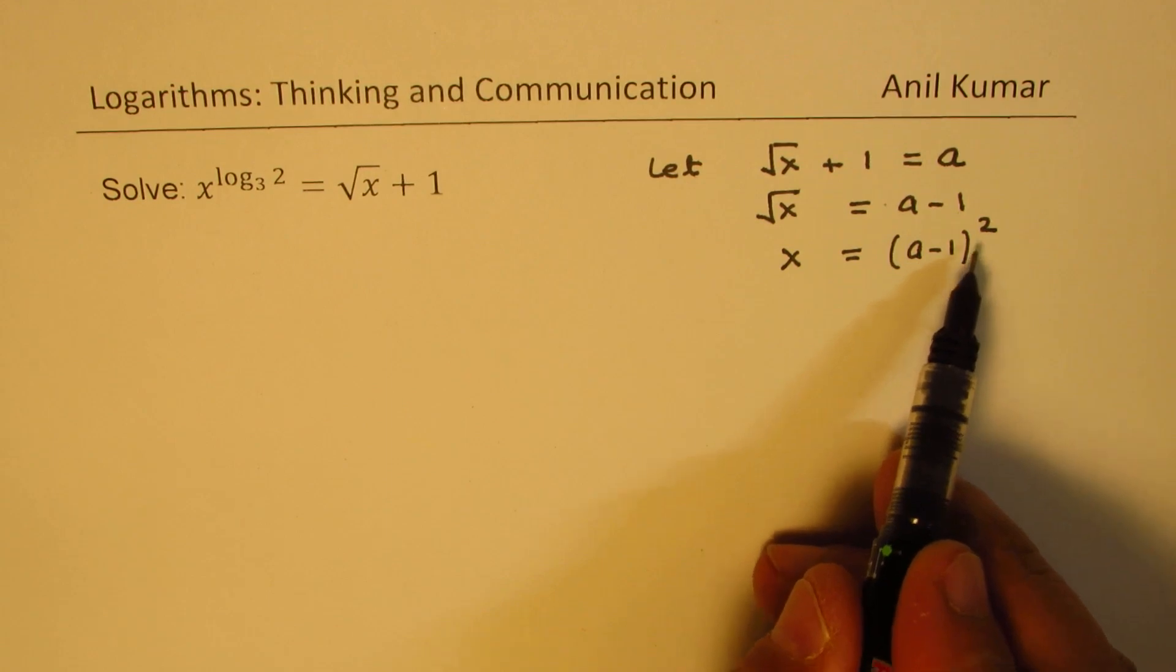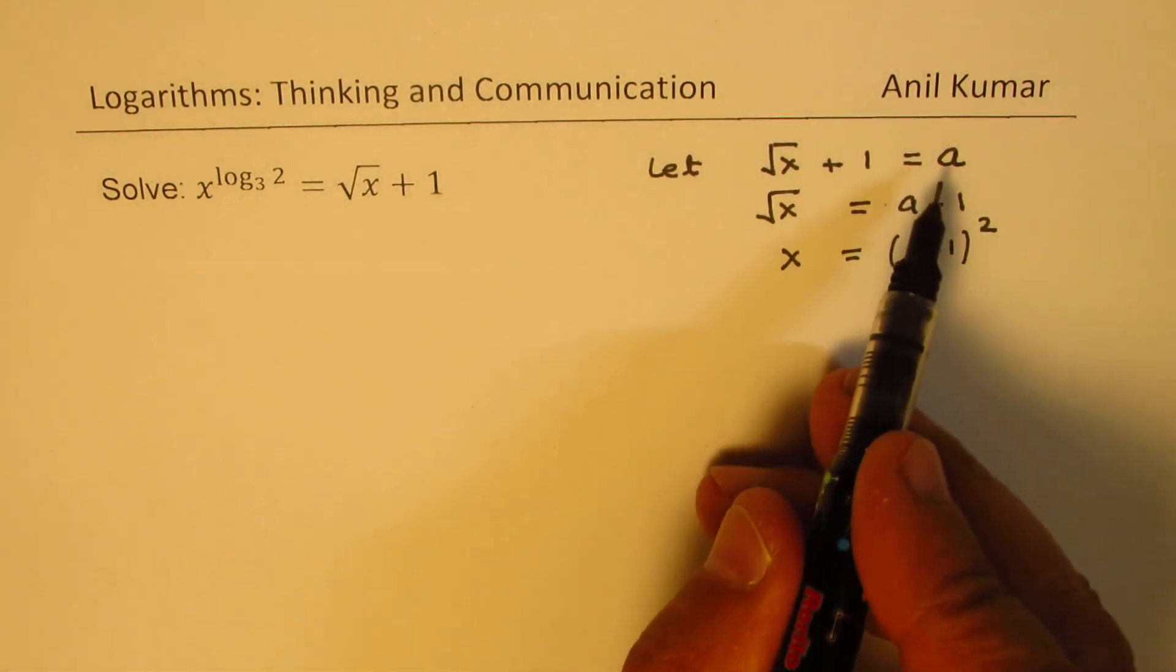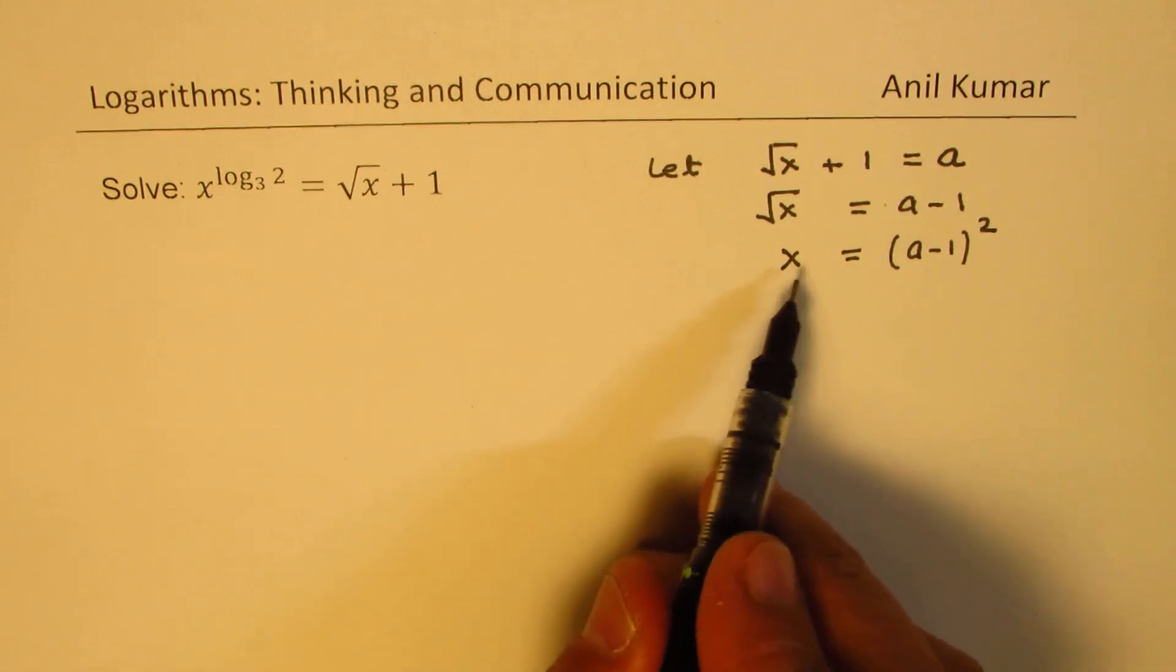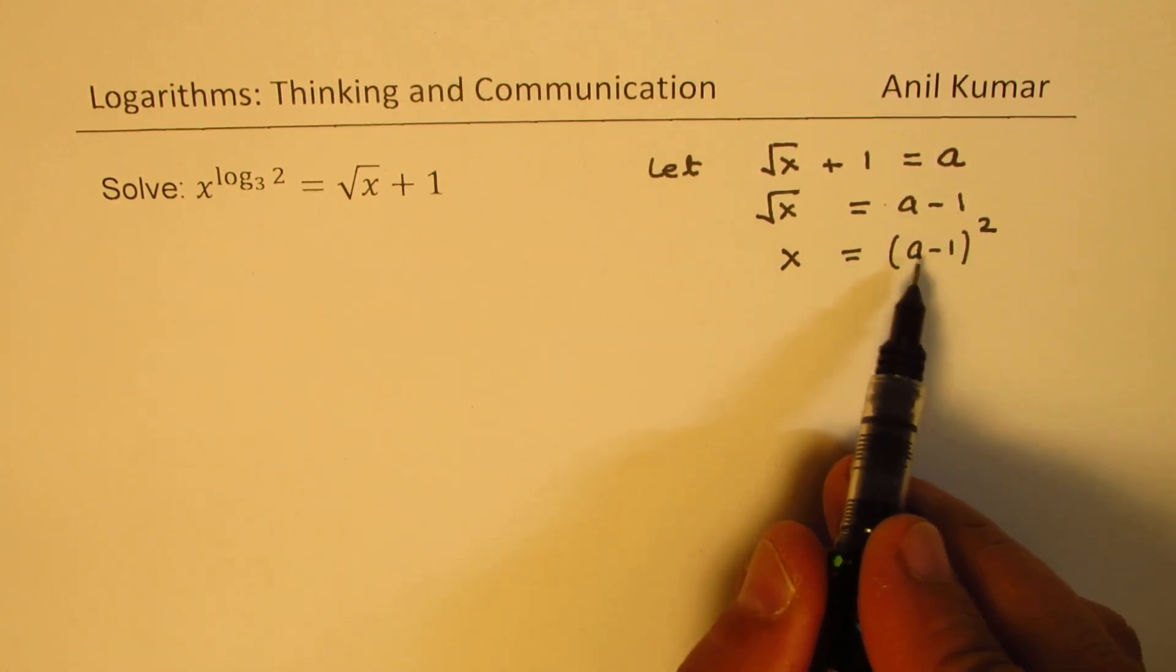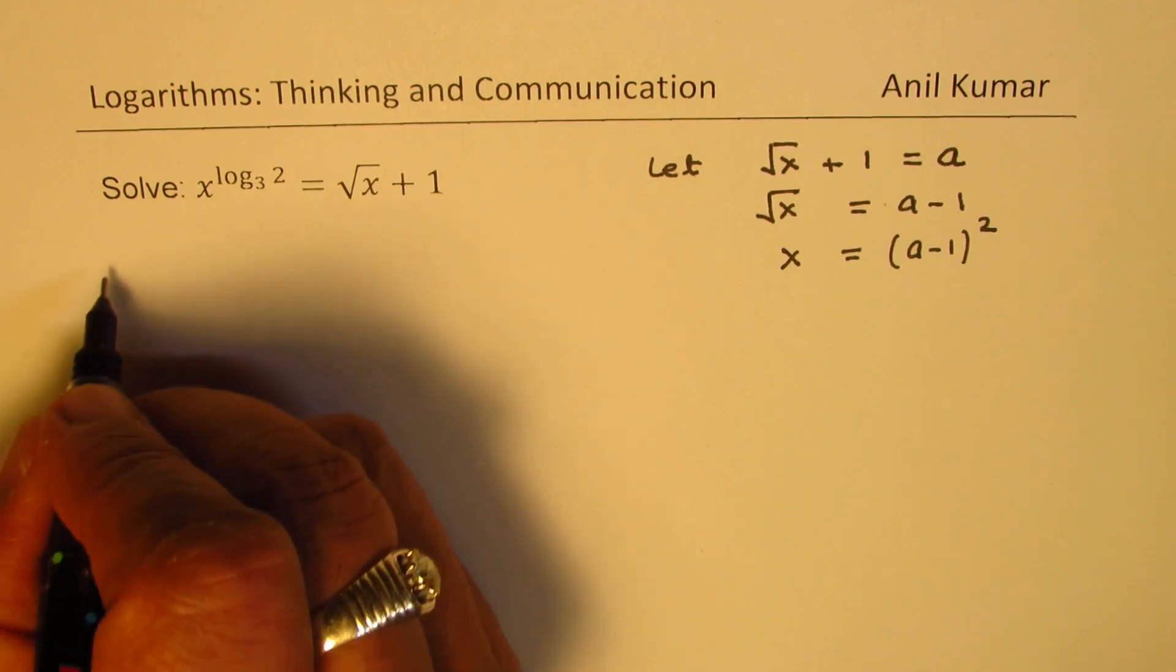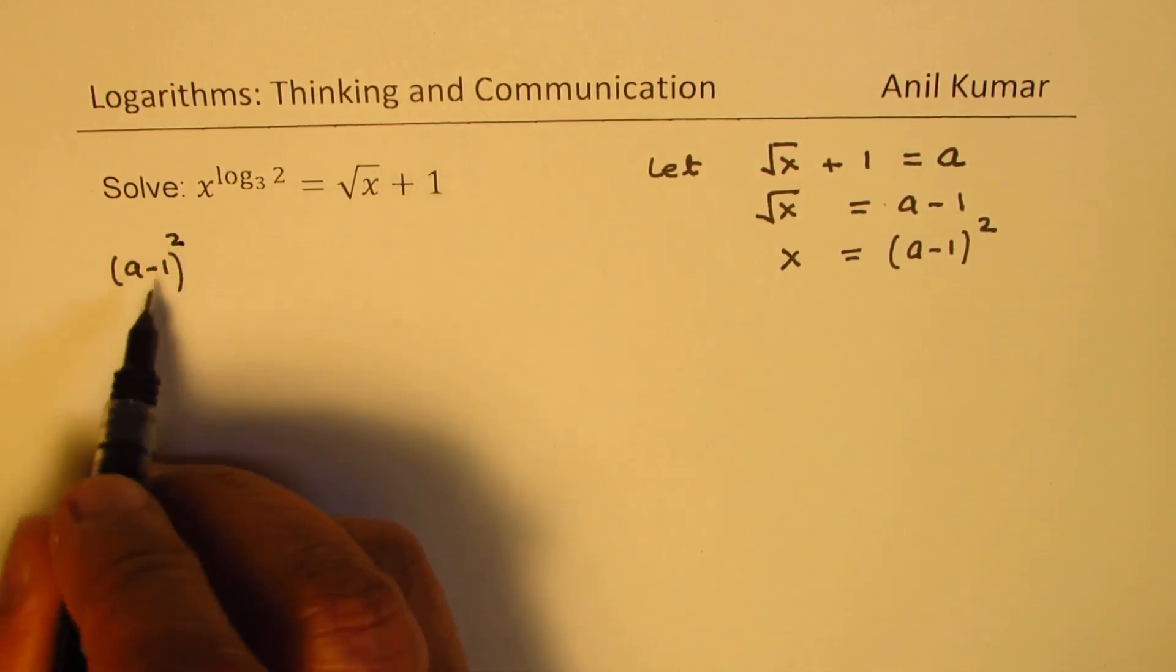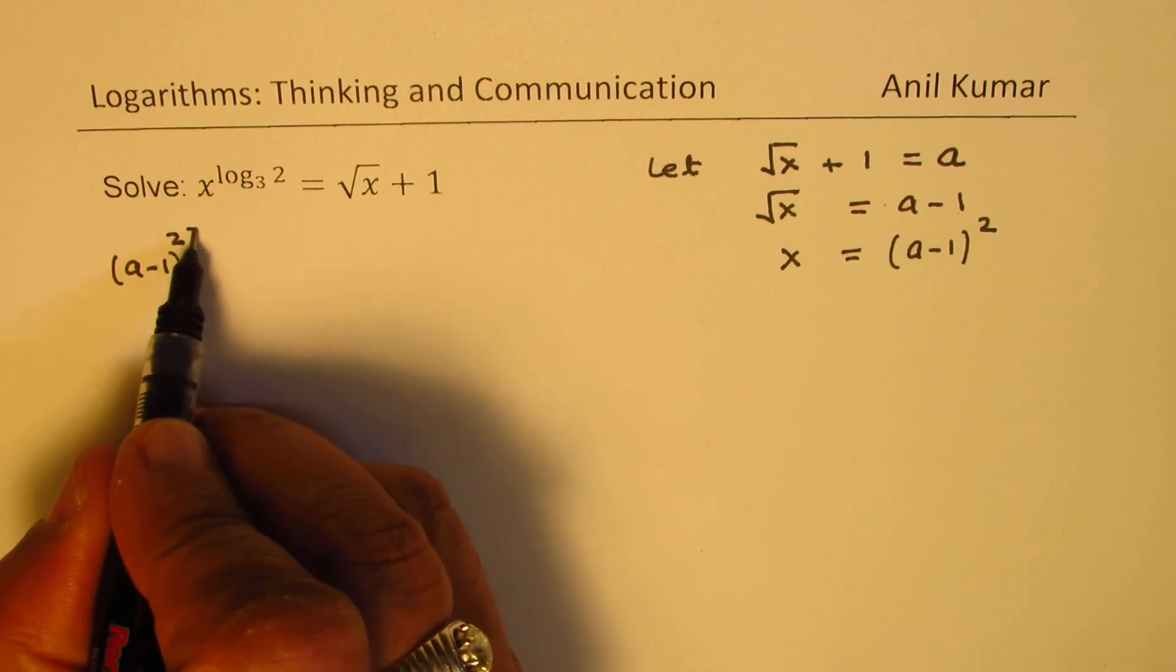Now x is a minus 1 whole square and the right hand side is a. So we can continue with our equation substituting for x, a minus 1 whole square. On the left hand side we get a minus 1 whole square for x.